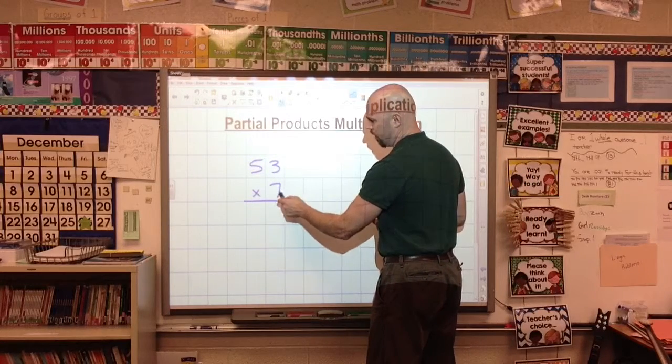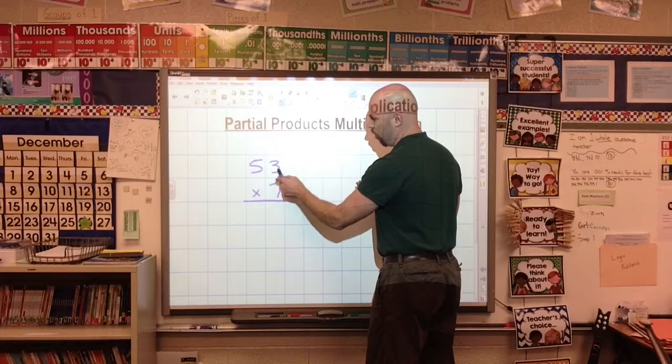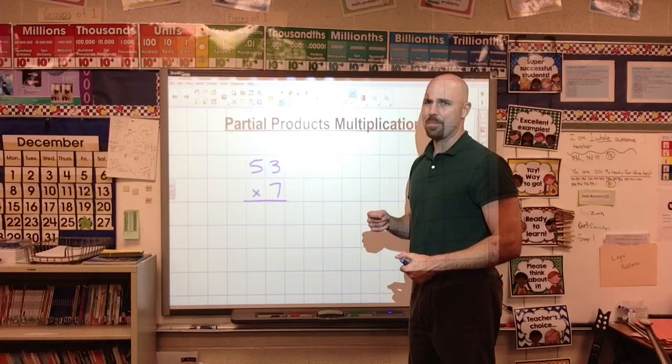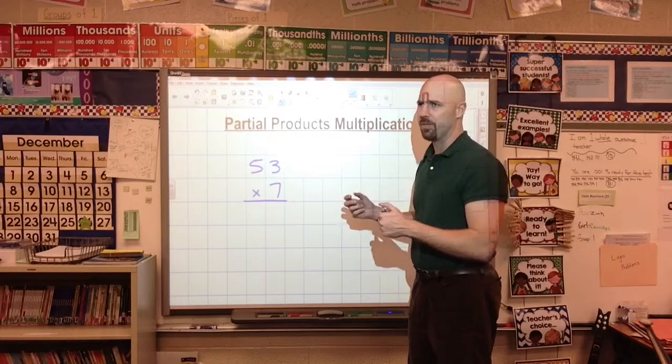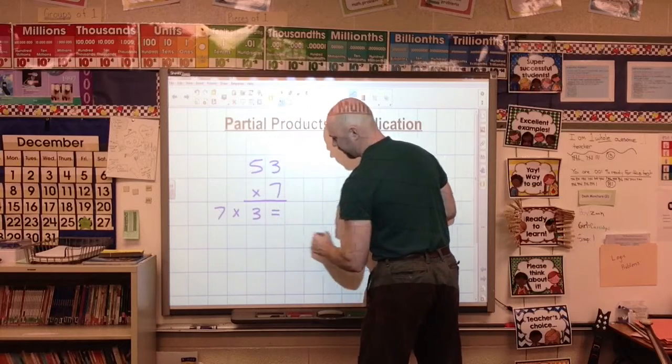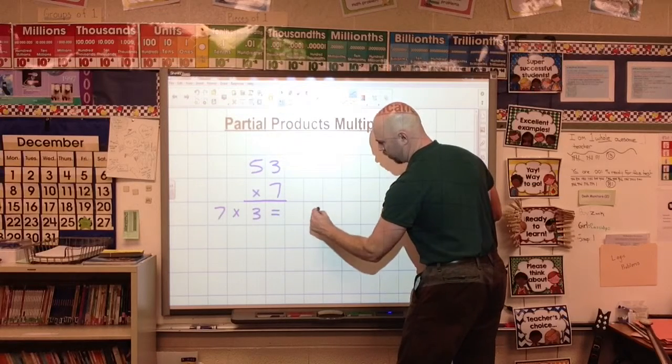So let's take a look here. 53 times 7. Let's do the first part. Let's just look at the ones place. Let's do 7 groups of 3. And notice I'm not saying 7 times 3 right now. I'm saying 7 groups of 3.